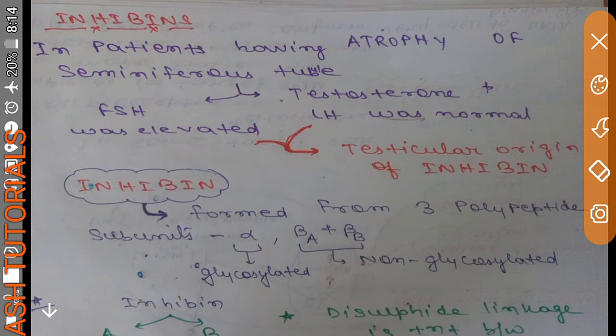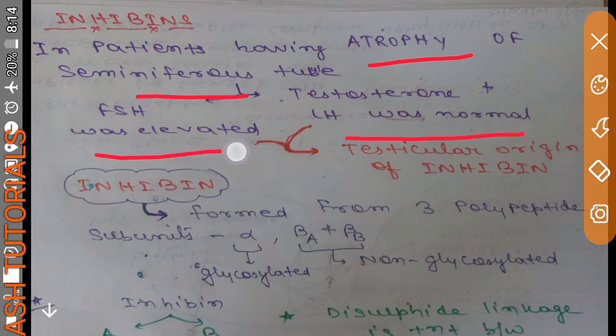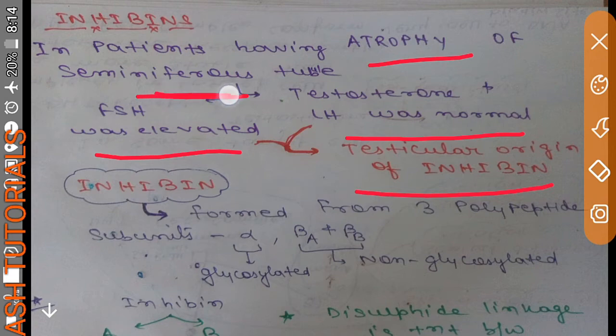LH secretion from the pituitary gland. But in patients which have atrophy of the seminiferous tubules, it was observed that testosterone and LH were normal, but FSH level was elevated. These observations led to the search for inhibin — a factor of testicular origin that inhibits FSH.